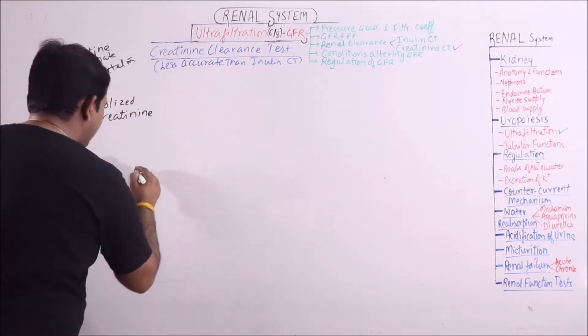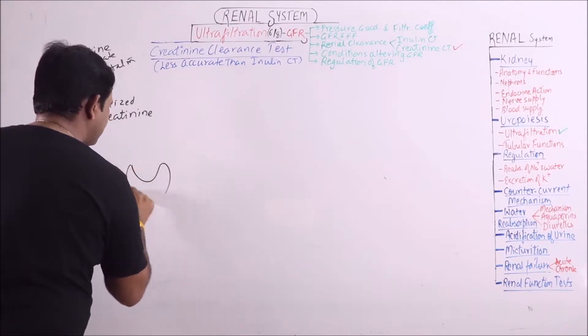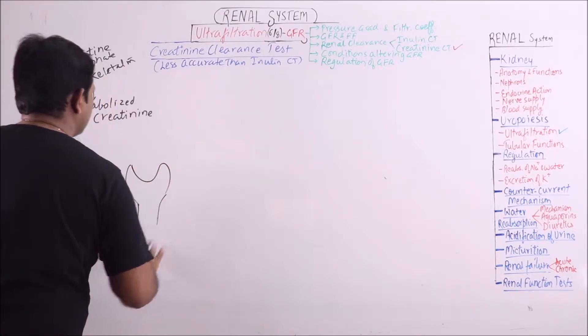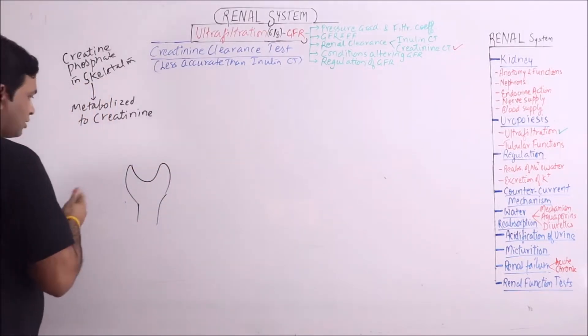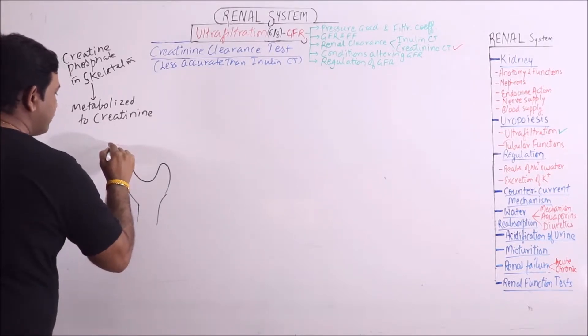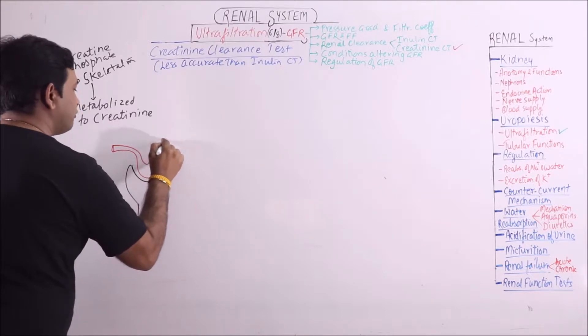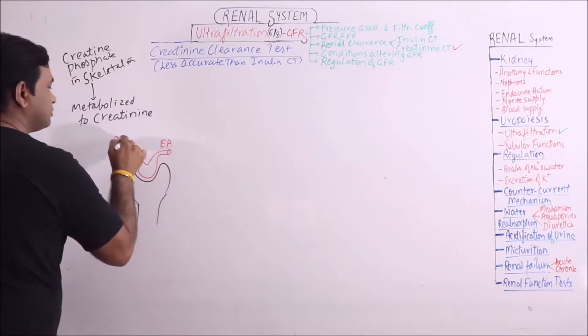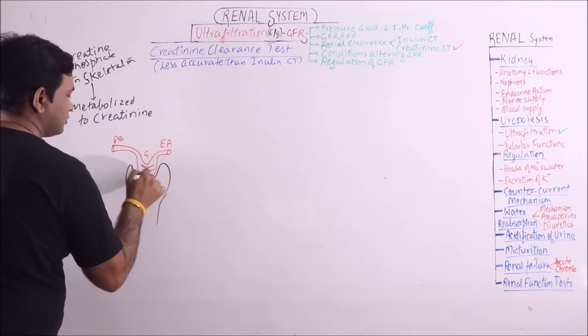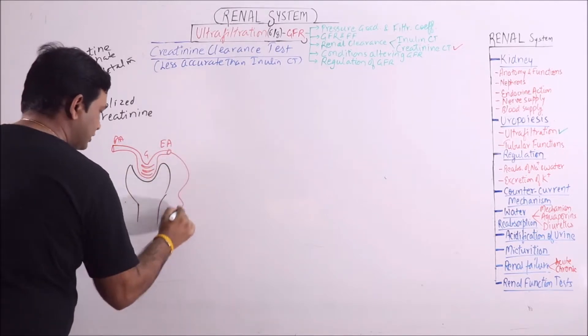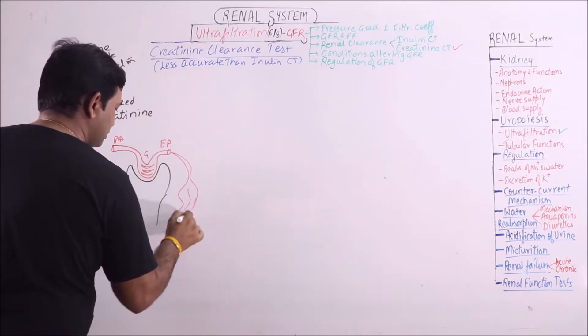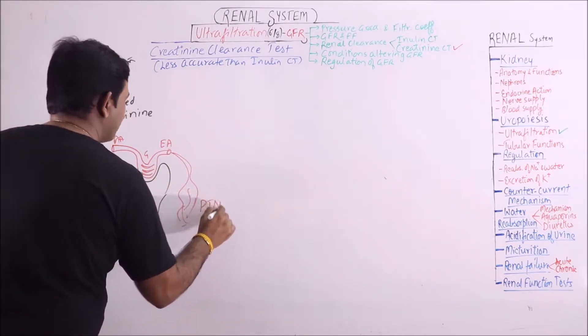If we take, this is Bowman's capsule. This is afferent arteriole, glomerulus, efferent arteriole. And finally this one is peritubular network of capillaries.